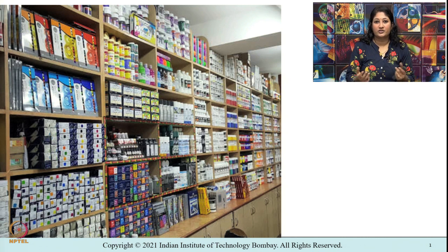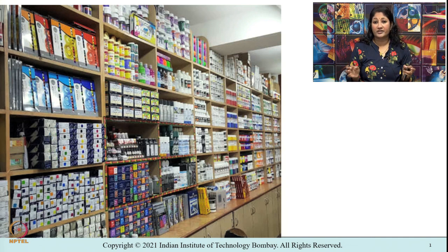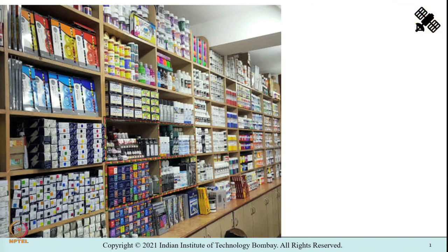Even in digital image processing using microwave images, we can perform a similar operation wherein we can represent pixels or classify pixels which represent a particular feature. By feature I mean urban area, sand, fallow land, vegetation, water body.